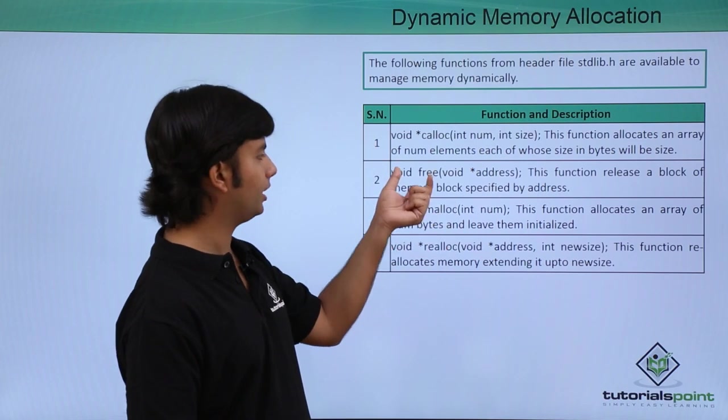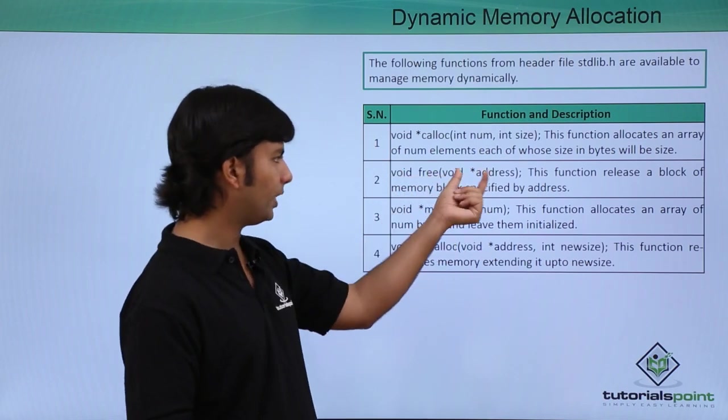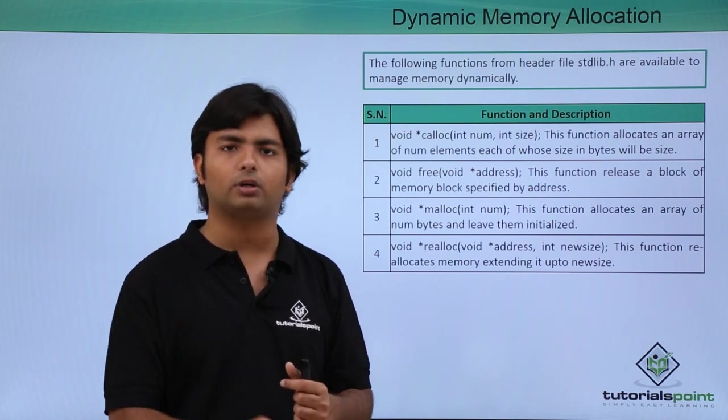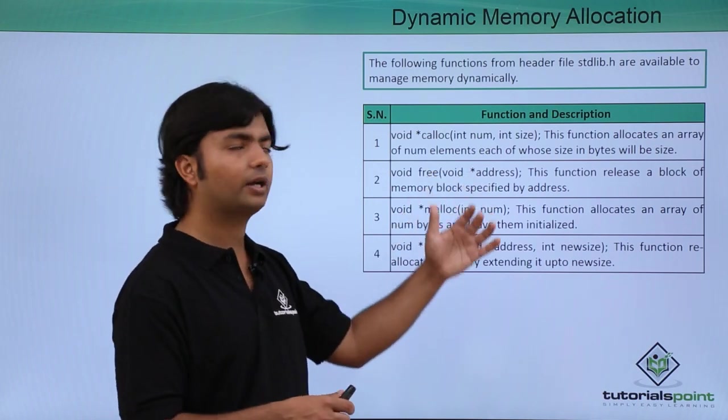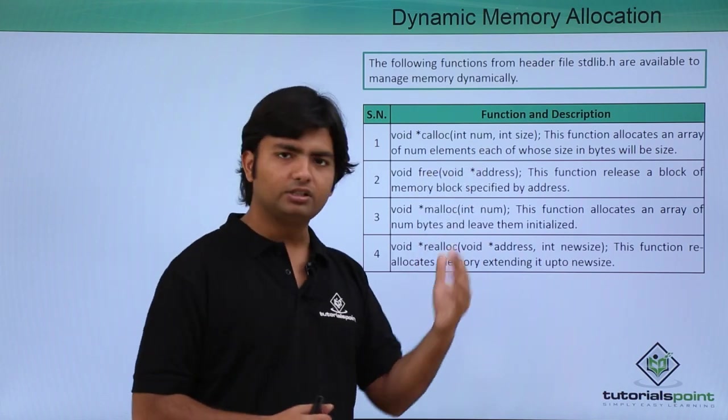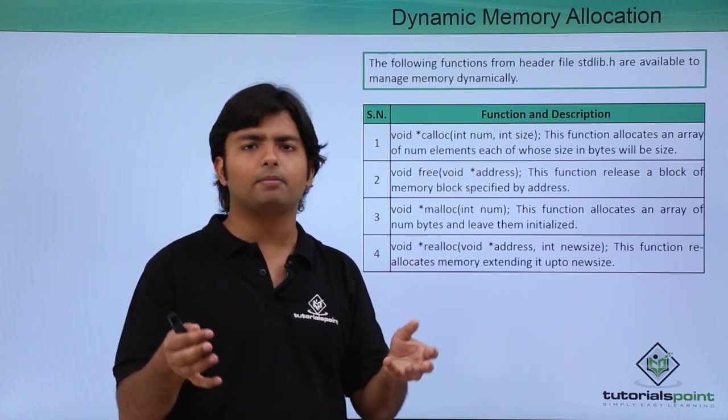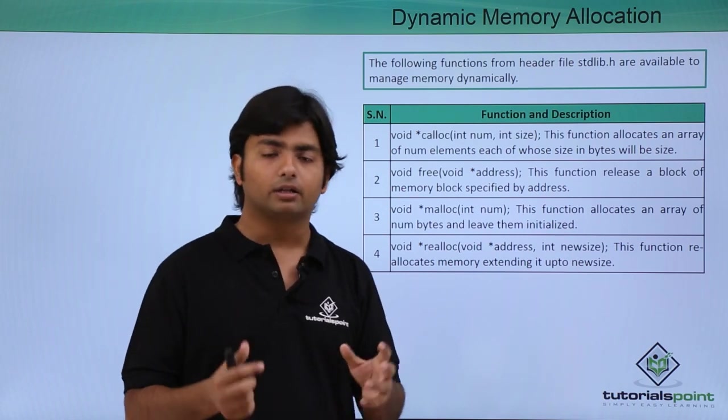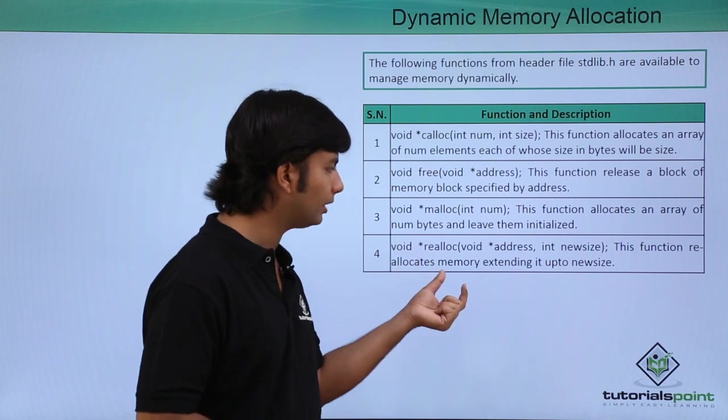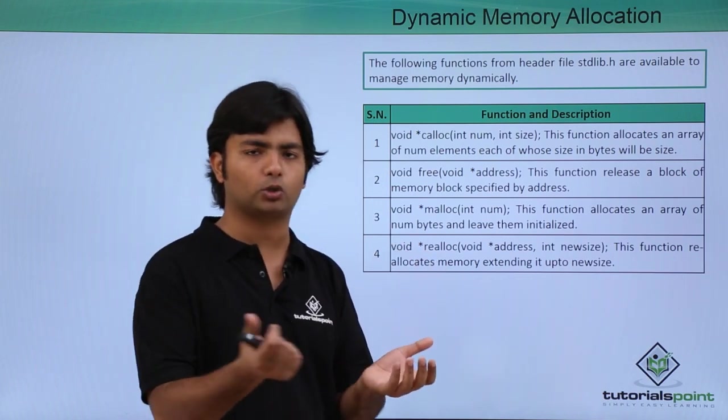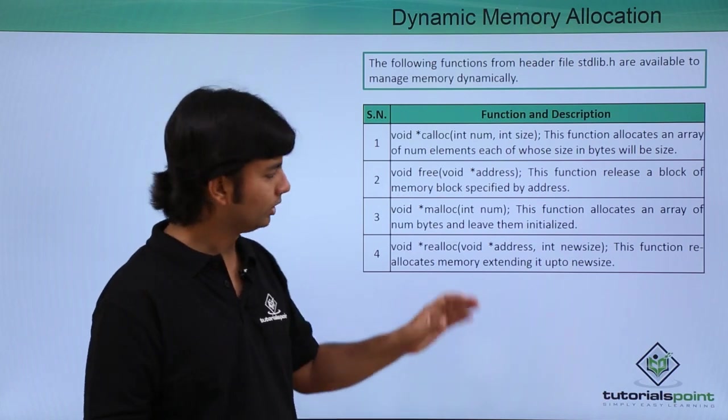Once you've allocated memory through malloc or calloc, you can use the free method to release it by passing the address. The memory can then be reused. If you need to change the allocated size—for example, from 30 bytes to 40 bytes—you can use the realloc method to reallocate the memory to a new size.